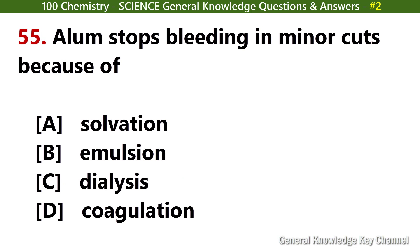Aluminium stops bleeding in minor cuts because of? Answer D: Coagulation.